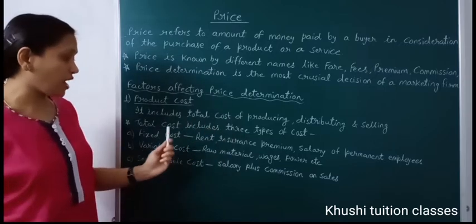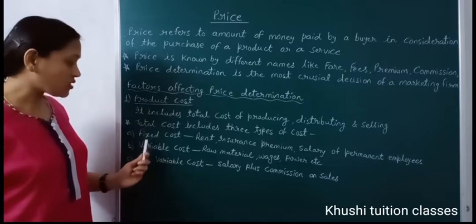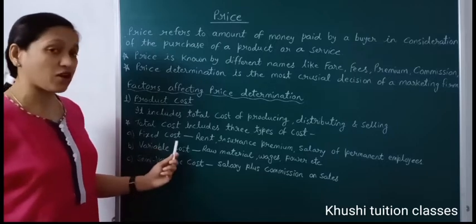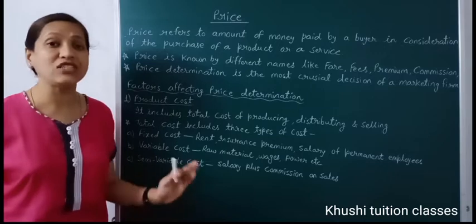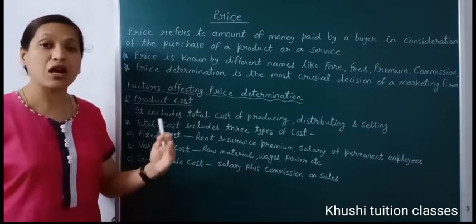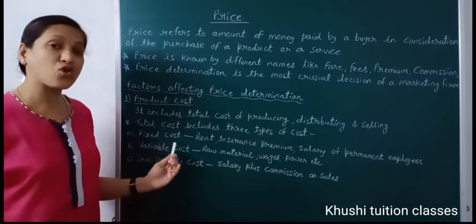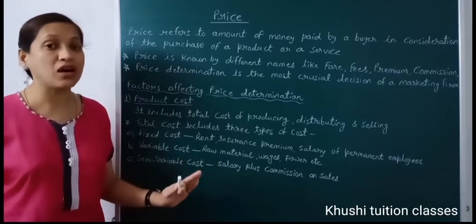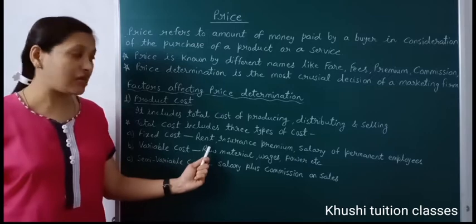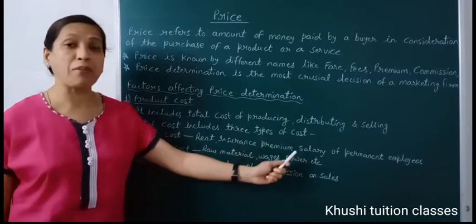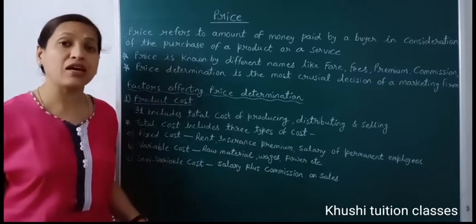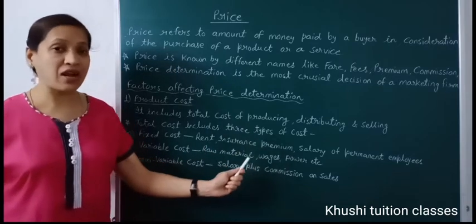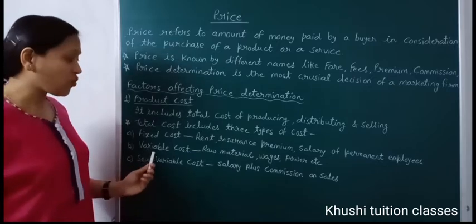This total cost of production includes three types of cost: fixed cost, variable cost, and semi-variable cost. Fixed cost is the cost which does not change with the change in production — हम production कम करें या ज़्यादा, हमारी fixed cost same रहती है। For example, rent of a building, insurance premium, salary of permanent employees — यदि आपने factory बंद करके भी रखी है या maximum production कर रहे हैं, तब भी ये expenses fix रहेंगे।